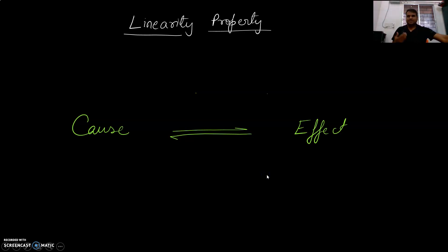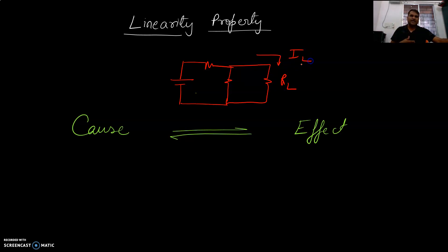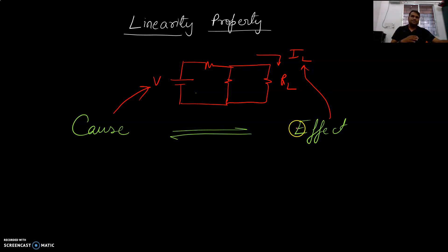To understand the linear property, we would like to say that there are two things in this world: if there is a cause, there is an effect. In electrical terms, what is a cause? The cause may be the voltage, the supply voltage. If a DC supply voltage is given to any network, there is an effect. Suppose a DC supply voltage is connected with a resistor and a load RL, and whatever current is going through the load is called IL, and the supply voltage is V. The cause is the voltage and the effect is the load current.